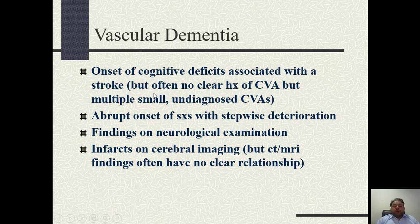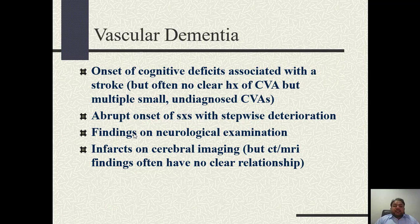Vascular dementia is characterized by cognitive impairment due to strokes or vascular events. It is characterized by a stepladder pattern of decline in cognition. For example, the patient is at one level, then a stroke occurs and cognition suddenly falls, then achieves a static level, then another stroke causes another drop. In Alzheimer's disease there is a progressive decline, but in vascular dementia it is a stepladder pattern.